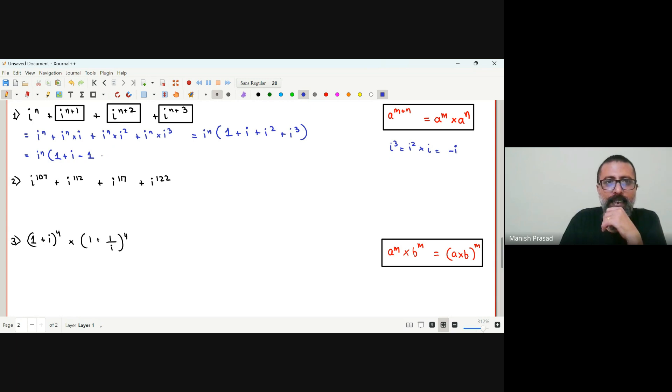So this is negative i. Now you can see, positive i cancels with negative i, plus 1 cancels with negative 1. So what do we have? We have a bracket under zero. Zero multiplied by anything is zero.